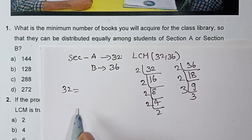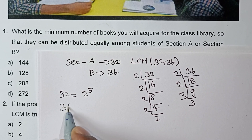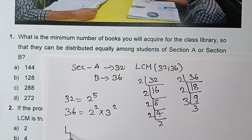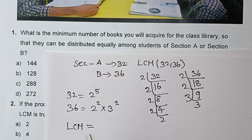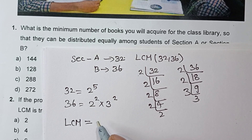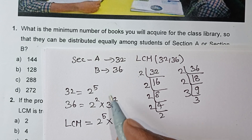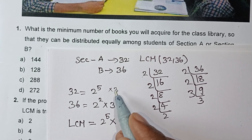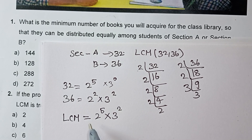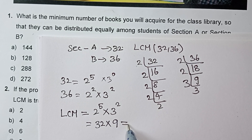32 = 2 power 5. 36 = 2 power 2 × 3 power 2. For LCM, we take the biggest power. Comparing 2² and 2⁵, the bigger is 2⁵. For 3: 32 has no factor of 3, so 3 power 0; 36 has 3². The bigger is 3². So LCM = 2⁵ × 3² = 32 × 9 = 288.